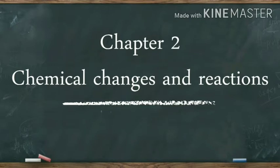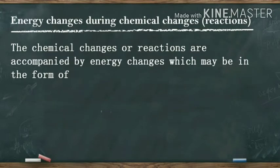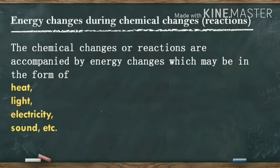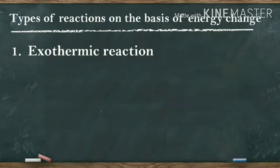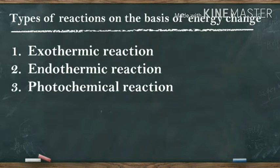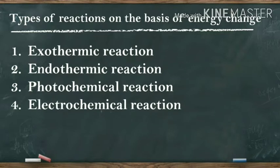As we know, chemical changes or reactions are always accompanied by energy changes, which may be in the form of heat, light, electricity, sound, and work. In this video today, we will study about the types of chemical reactions on the basis of energy change. On this basis, we have 4 types: exothermic reaction, endothermic reaction, photochemical reaction, and electrochemical reaction.